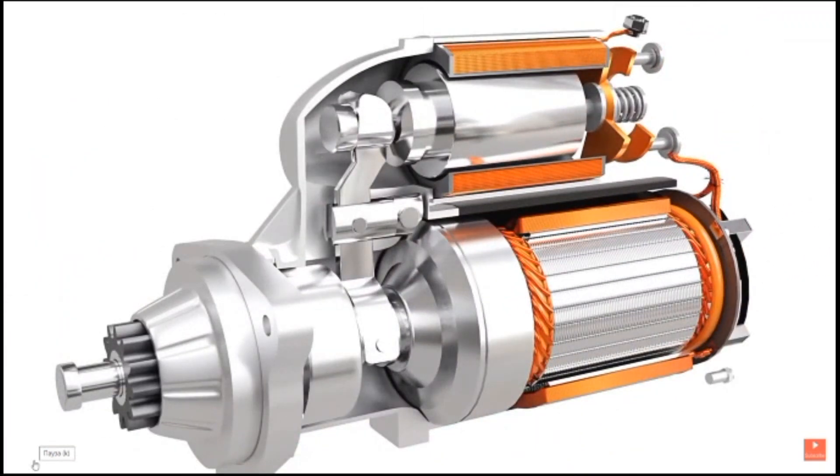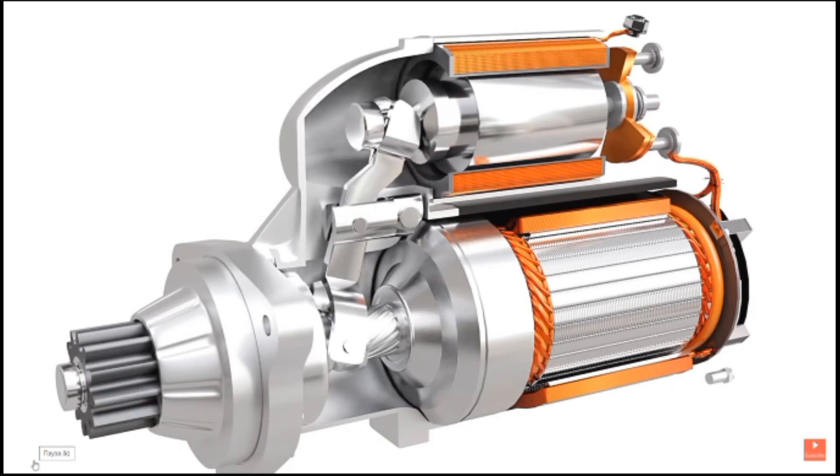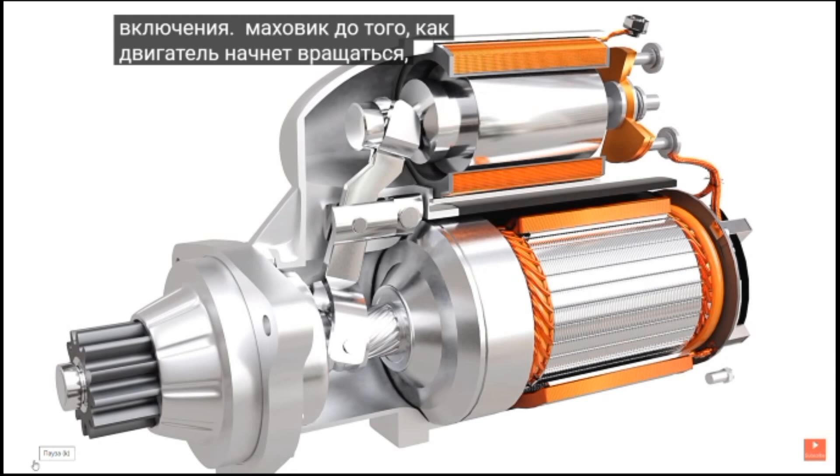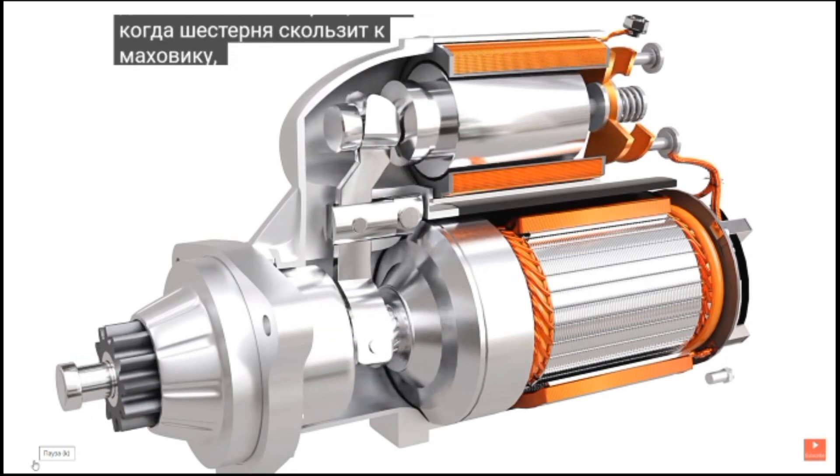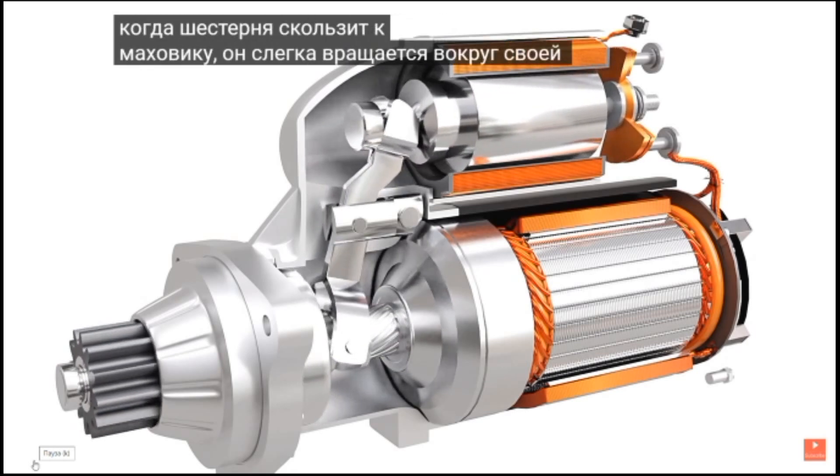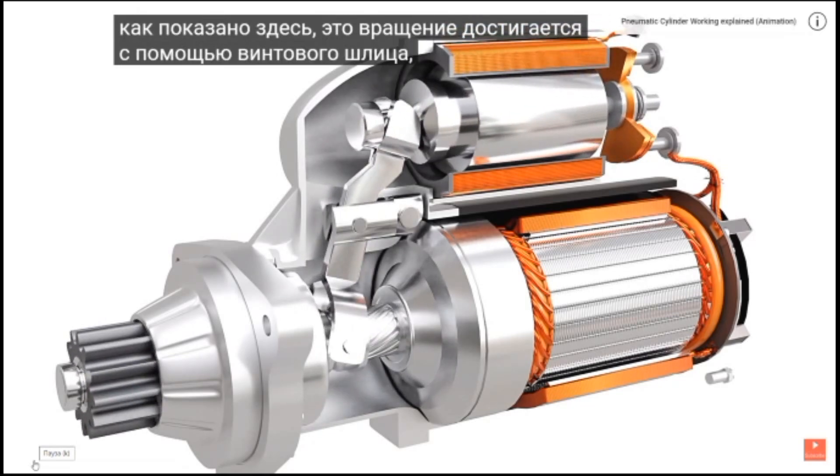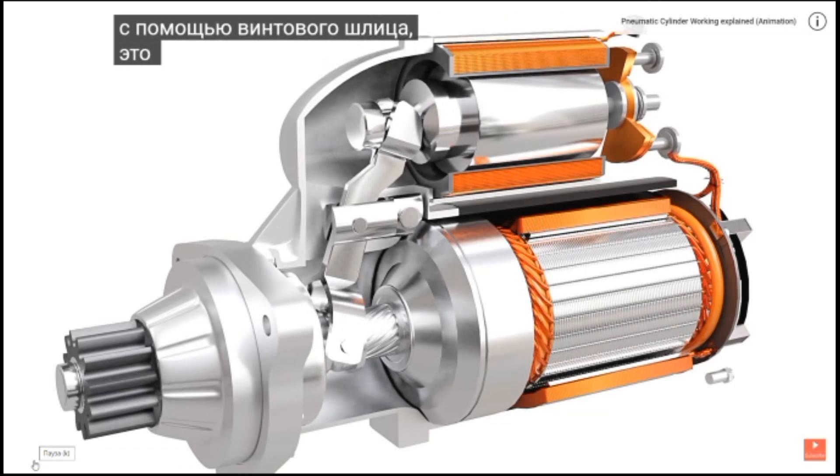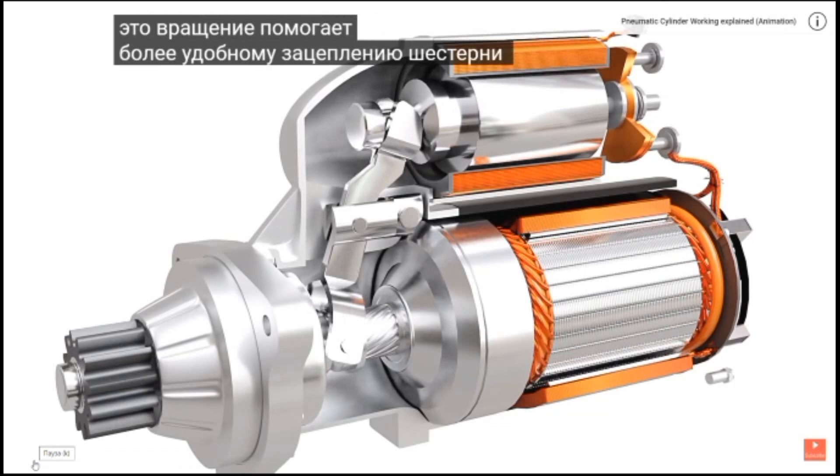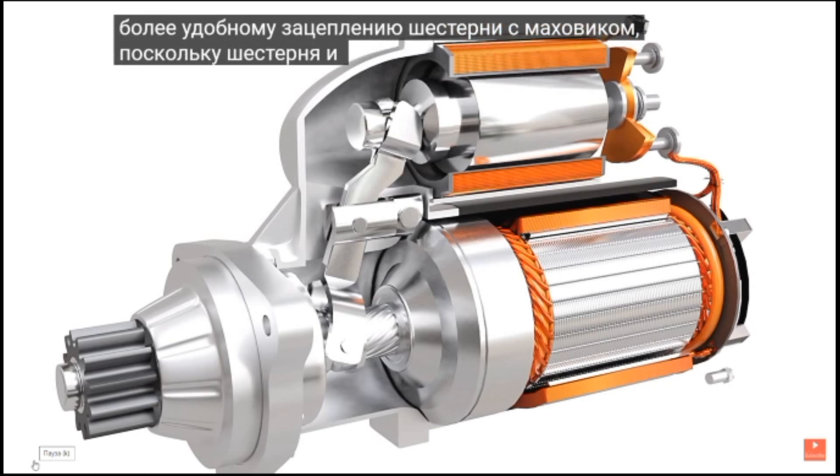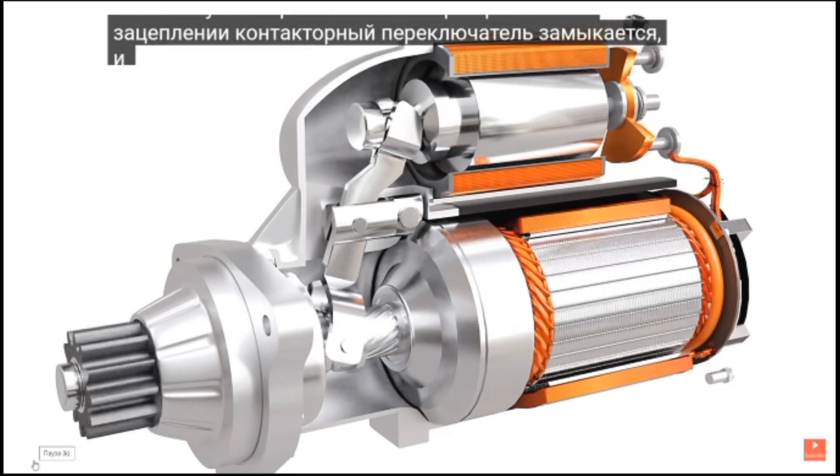The solenoid has another crucial function. It helps to slide the pinion and engage it with a flywheel before the motor starts to spin. As the pinion slides towards the flywheel, it slightly rotates on its axis, as shown here. This rotation is achieved by using a helical spline. This rotation helps meshing the pinion with the flywheel more conveniently. As the pinion and flywheel is properly meshed, the contactor switch gets closed, and the motor spins.